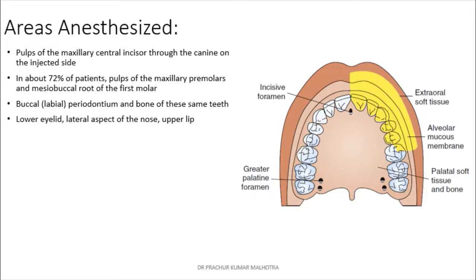Areas anesthetized include the pulp of the maxillary central incisors through the canine on the injected side in about 72 percent of patients. The pulp of the maxillary premolars and the mesiobuccal root of the first molar are also anesthetized, along with the buccal periodontium, bone on the same side, lower eyelid, lateral aspect of the nose, and the upper lip.